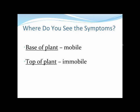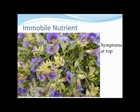Conversely, with an immobile element, we see the symptoms at the top of the plant first. The element can't be reallocated from the lower leaves to the top where the plant needs it, so symptoms start at the top. This is the classic iron deficiency with Calibrachoa — the iron is needed at the growing point, but lower leaves cannot reallocate it upward, so symptoms start at the top.